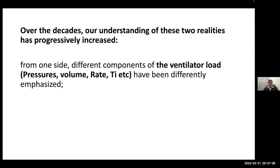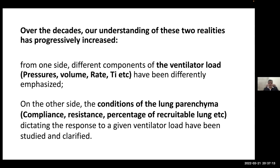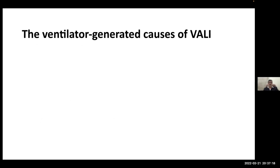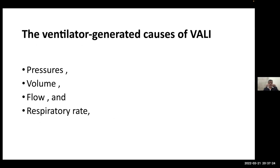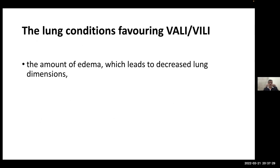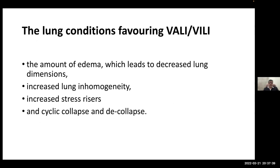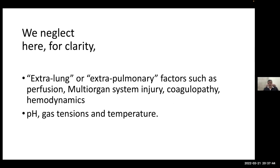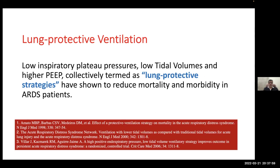On one side we have ventilator load — pressure, volume, rates, and inspiratory time. On the other side we have conditions within the lung parenchyma: compliance, airway resistance, percentage of recruitable lung, etc. The ventilator-generated causes of injury are pressure, volume, flow, inspiratory time, and respiratory rate. Lung conditions predisposing to injury include edema decreasing lung dimensions — the baby lung — increased inhomogeneity, increased stress risers, and cyclical collapse and de-collapse. For clarity, we will neglect extra-pulmonary factors such as multi-organ dysfunction, perfusion, coagulopathy, hemodynamics, and blood gas or temperature abnormalities.